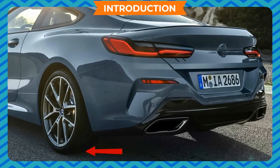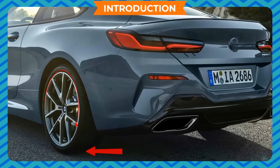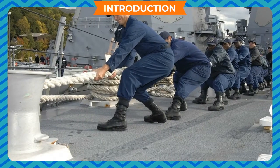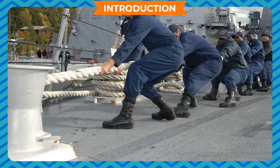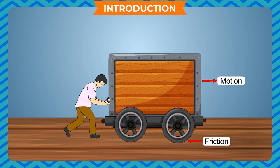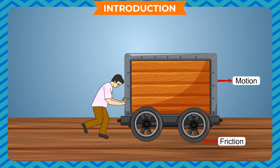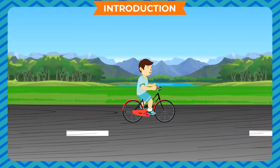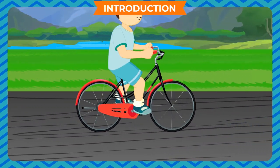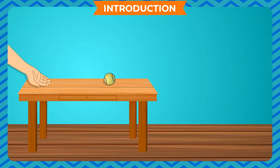The phenomenon which opposes the relative motion between two surfaces is called friction. Friction is a force which comes into play only when two surfaces are in contact. The force of friction always opposes the motion of an object. It tends to stop a moving object and also tends to prevent a stationary object from moving. We can therefore define friction as a force that slows down moving objects or prevents stationary objects from moving.